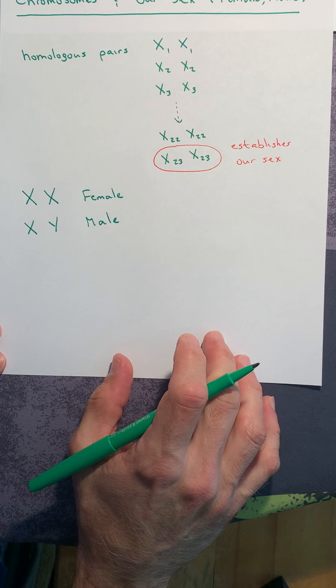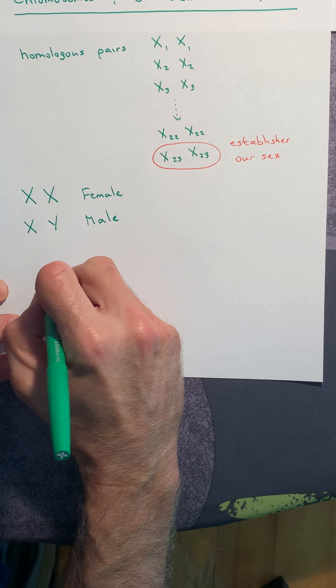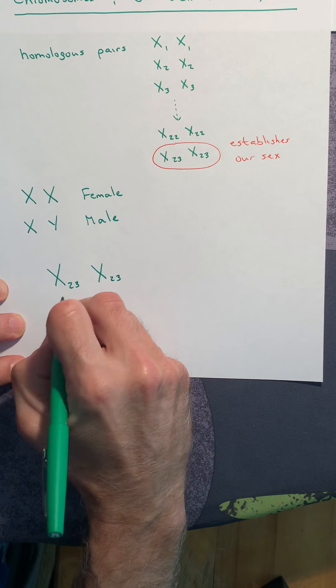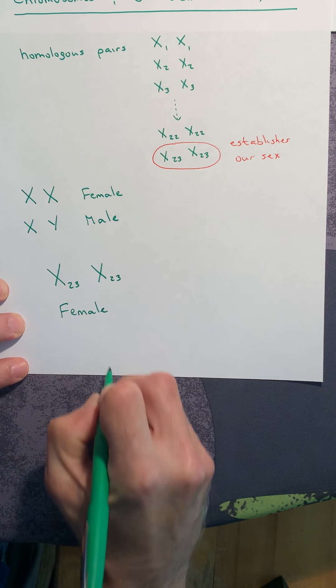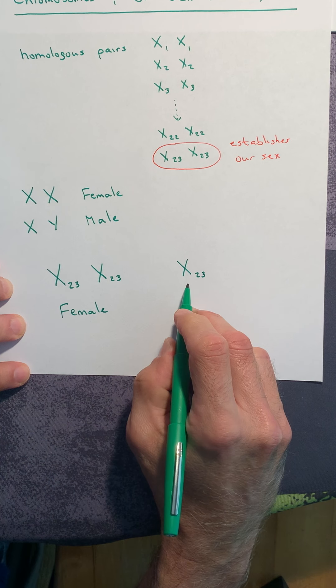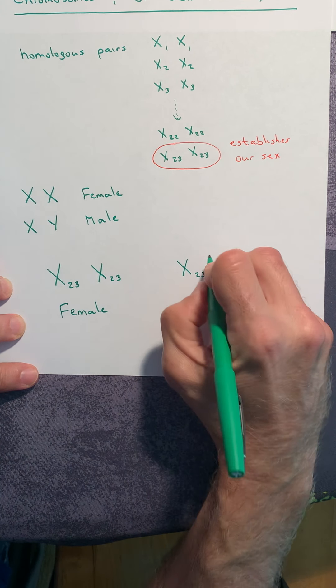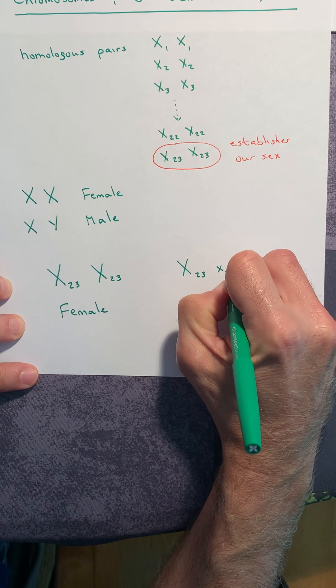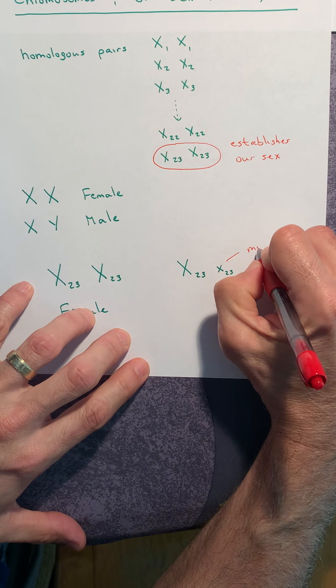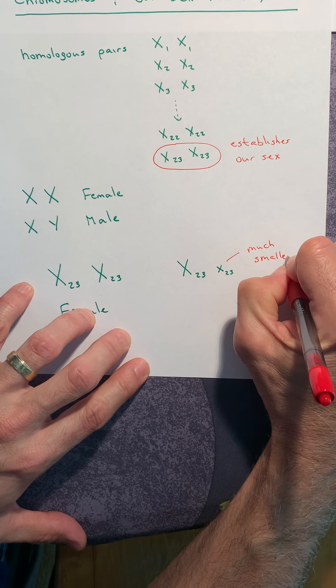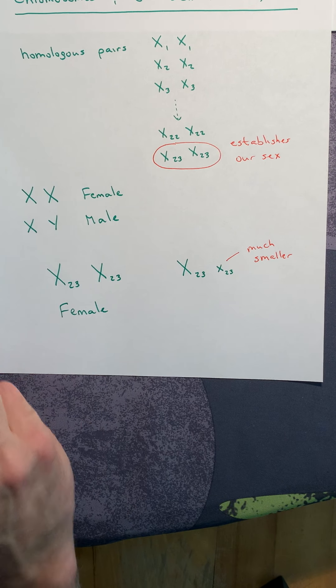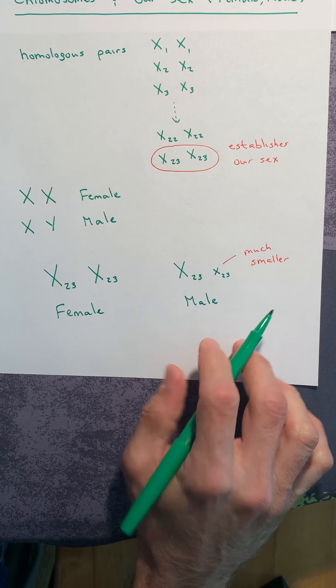So when you put these chromosomes under the microscope, it's really interesting. So you have number 23, number 23, and if they are the large X's, we refer to this individual as being female. But males are different. Males carry one of the large 23rd chromosomes. But what makes us male is this second chromosome here. As a male, we carry a much smaller X chromosome. It is much, much smaller. In fact, this chromosome is only about a third as big as the larger X. It's much smaller. And this is referred to as a male.